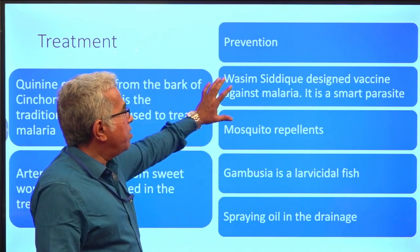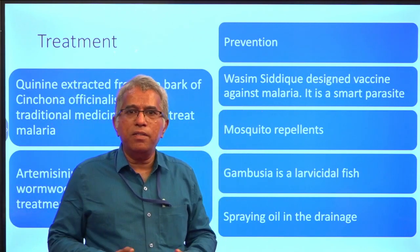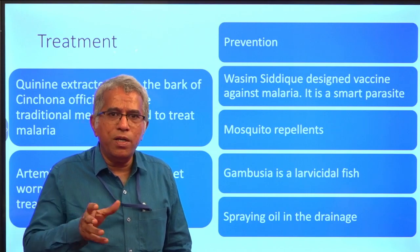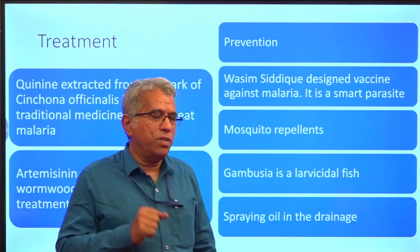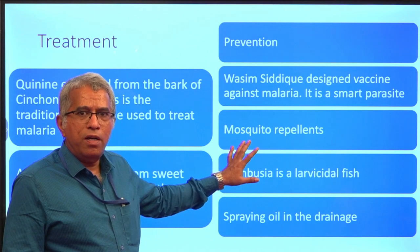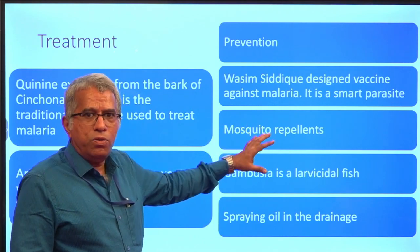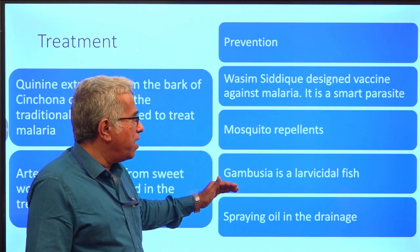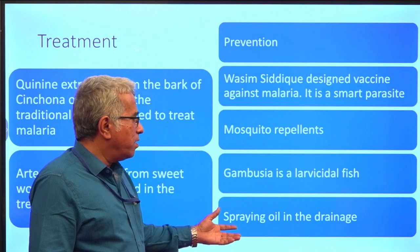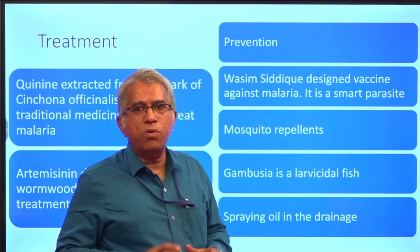For prevention: a vaccine was designed against malaria but it is less effective. The reason is that Plasmodium has a wonderful survival value — it is a very smart parasite that keeps on changing its outer coat which contains the antigens. Mosquito repellents can be used to prevent mosquito bites. Gambusia is a larvicidal fish which feeds on mosquito larvae, and spraying oils in drainage will prevent mosquito larvae from respiring — this is also an effective preventive measure.